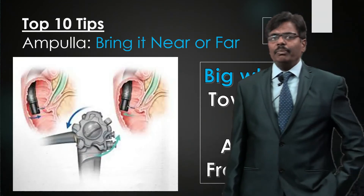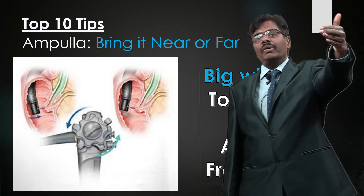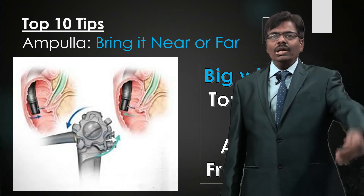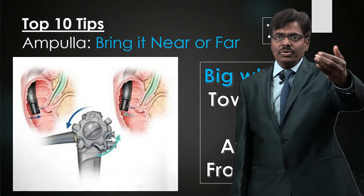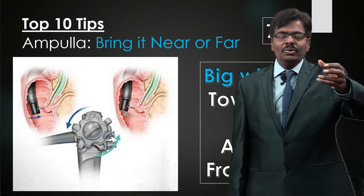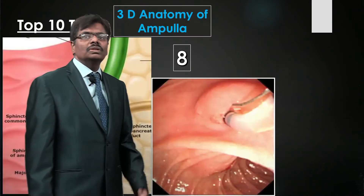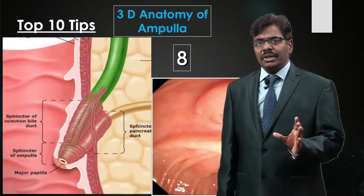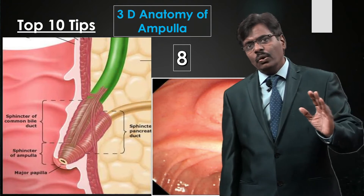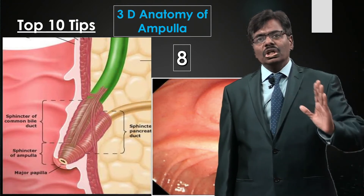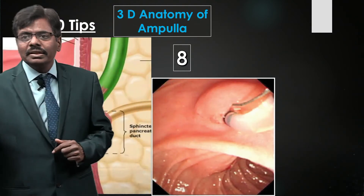Very rarely you will see two separate openings — most of the time there is a common channel. End-facing ampulla is ideal; down-facing means you must go further down. If the ampulla is far away after getting end-facing, bring it closer using two methods: apply suction, or use the big wheel — big wheel toward you brings the ampulla closer; big wheel away moves it further. The last tip concerns the three-dimensional anatomy: sphincter papillae has sphincter choledochus going toward 10 o'clock and sphincter pancreaticus going toward 2 o'clock.